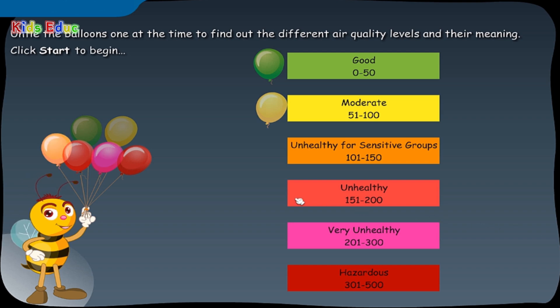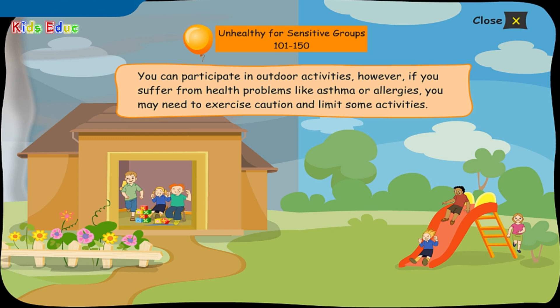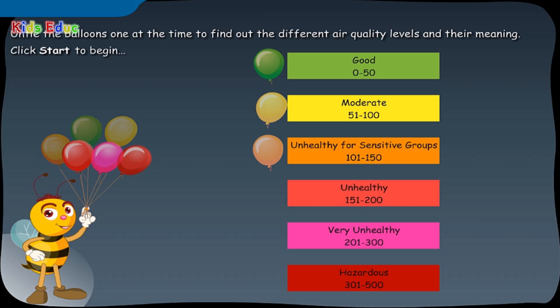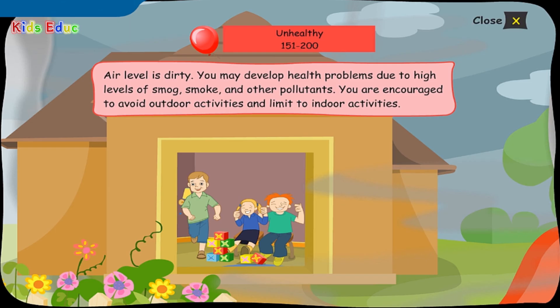Orange balloon: you can participate in outdoor activities; however, if you suffer from health problems like asthma or allergies, you may need to exercise caution and limit some activities. Red balloon: air level is dirty — you may develop health problems due to high levels of smog, smoke, and other pollutants. You are encouraged to avoid outdoor activities and limit to indoor activities.